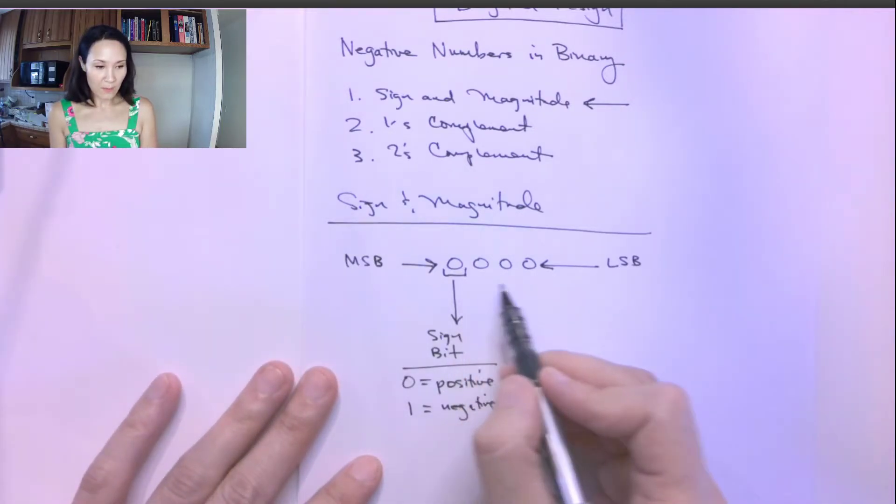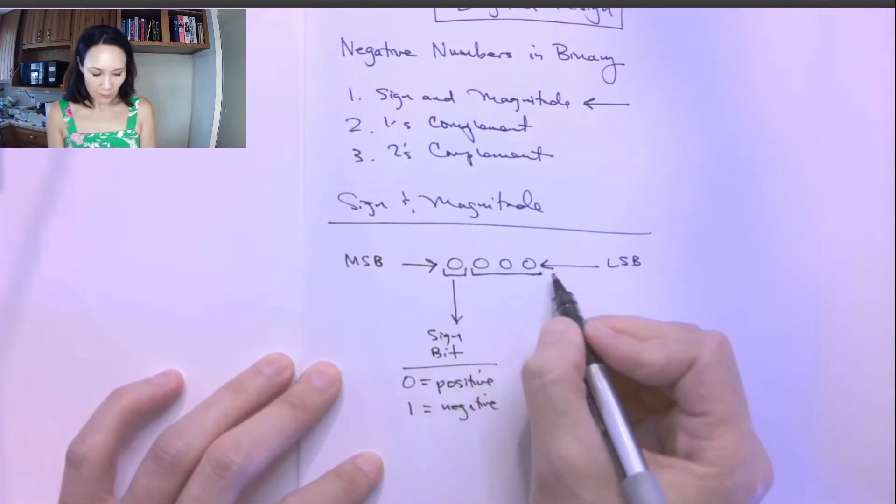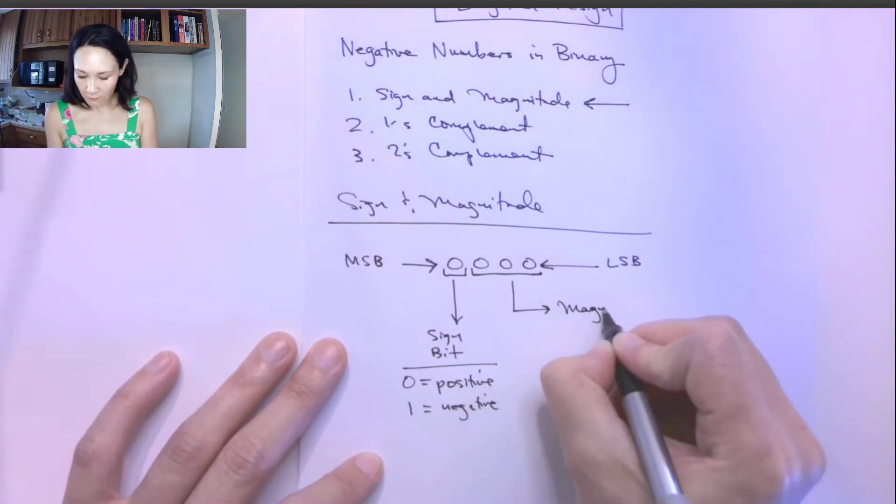Okay, so what about the rest of these bits? If we have, suppose, four bits, then these three bits here will be used for the magnitude of the number.